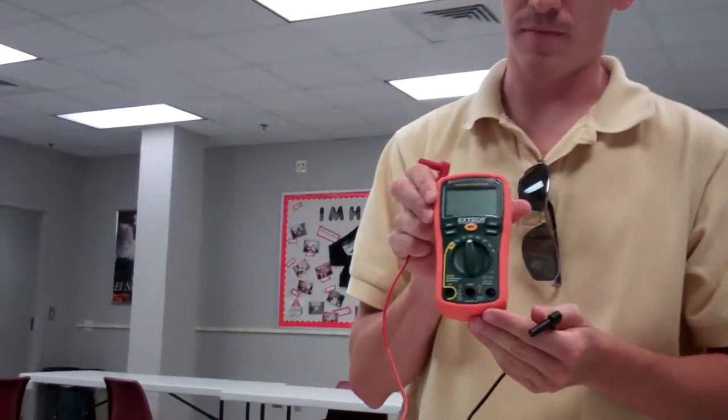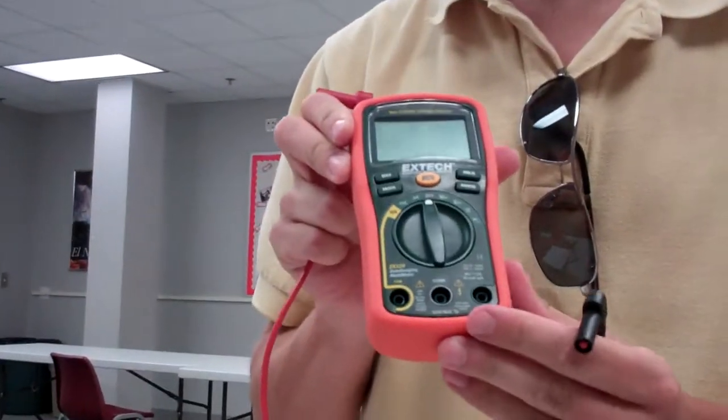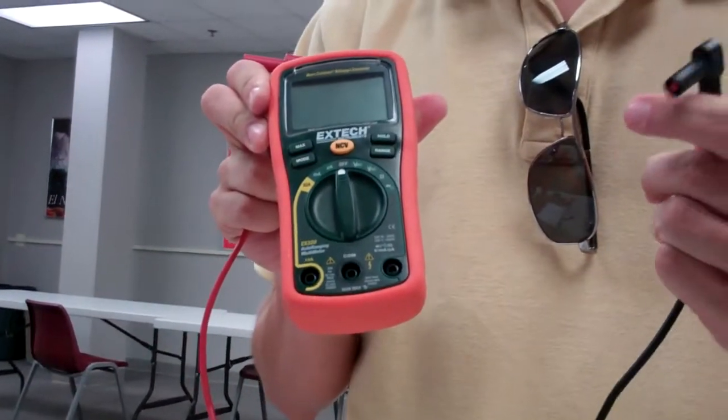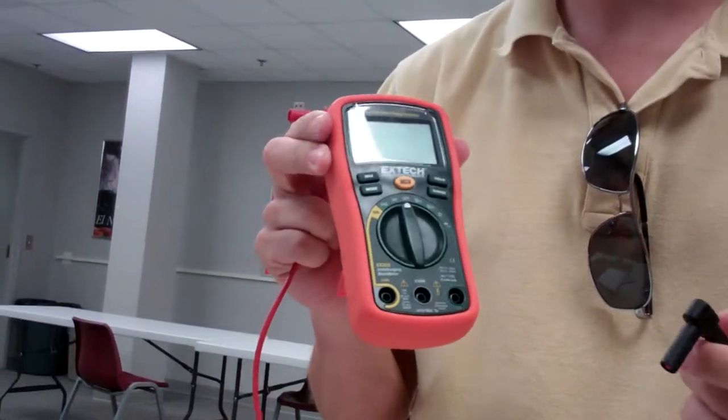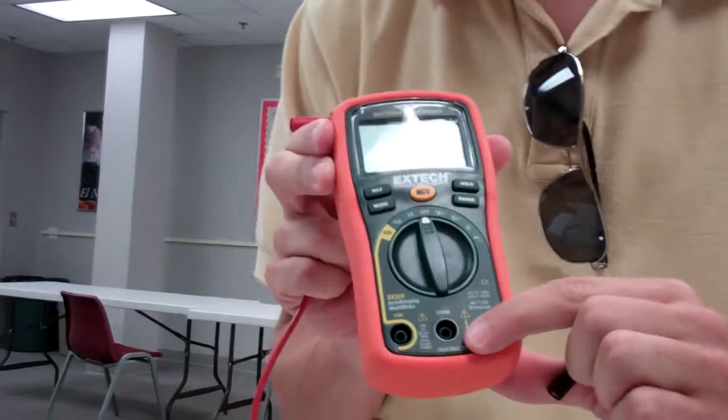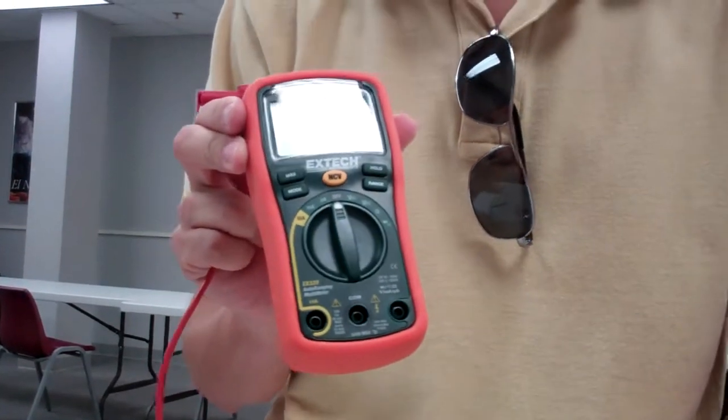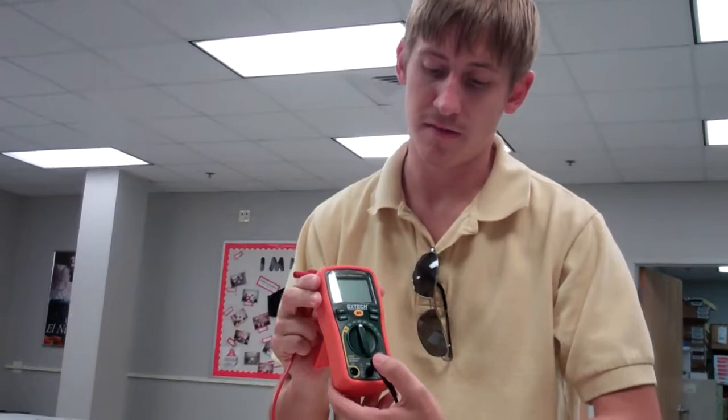If you look at your multimeter, you should be able to find some kind of color code on there to see where the negative goes because the negative will always be in the same post. Notice right here, there's a black circle. So the middle post is where I will be plugging this into.